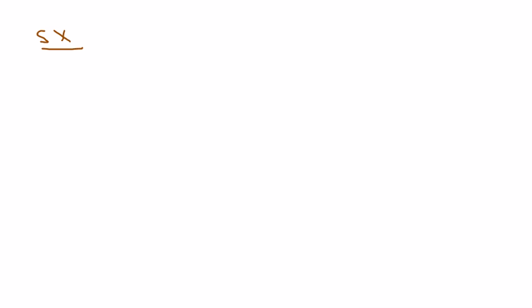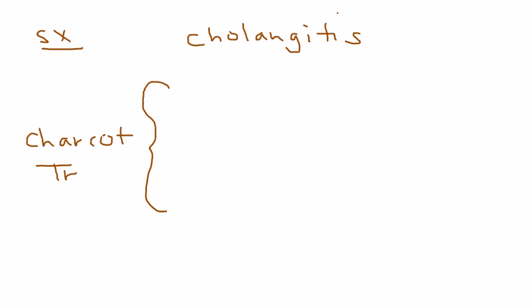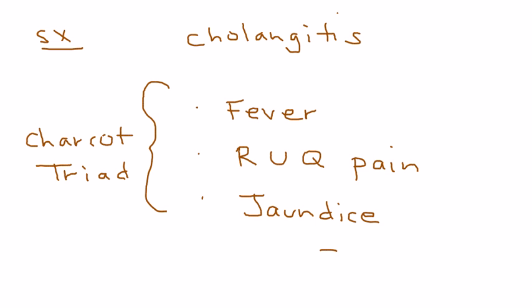So what are the symptoms of cholangitis? The symptoms of cholangitis, interestingly, have been given a special name - they're called Charcot's triad. So what are those three things that make up the triad? The first thing is fever. The next thing is right upper quadrant abdominal pain. And the third one is jaundice, which of course is yellowing of the skin. They can also be detected by doing liver enzymes such as ALT and AST.